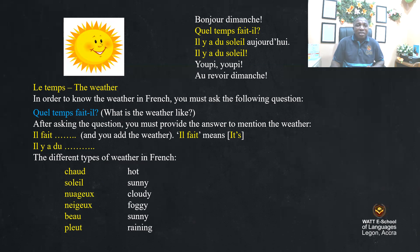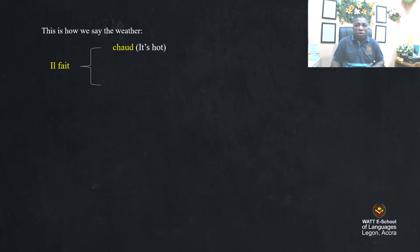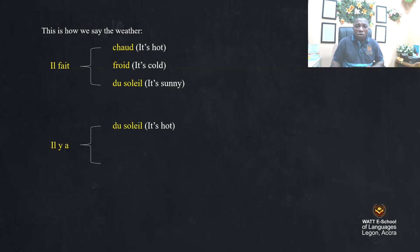That's not all, but you can see that these ones also express the weather in French. This is how we say the weather. If you know them, how do you express them? Il fait — when you say il fait, you add il fait chaud — it's hot. Il fait froid — it's cold. Remember, il fait means 'it's'. Il y a du soleil — it's sunny. You can also use the phrase il y a: il y a du soleil — it's sunny; il y a de la neige — it's cold; il y a du nuage — it's cloudy.